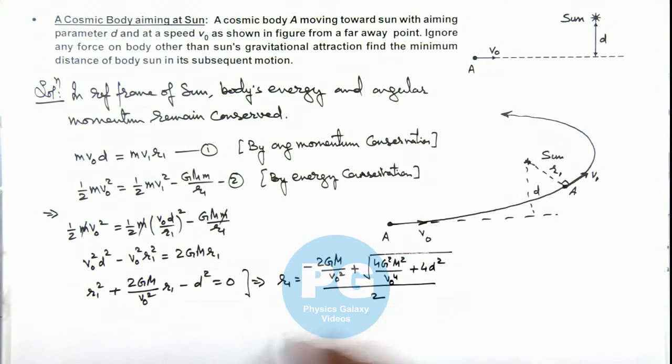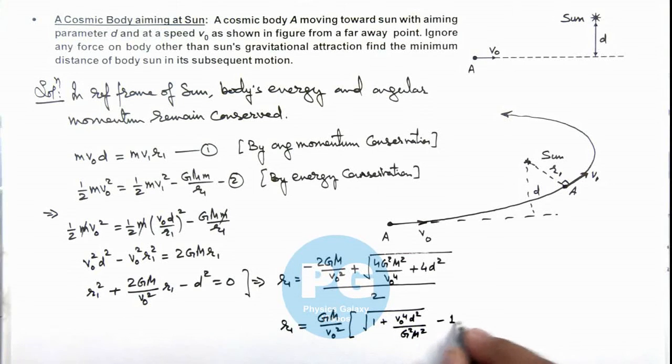So finally after simplification the value of r1, the distance of closest approach we are getting is G M by v not square. I can take common inside, I am having root of 1 plus v not to power 4 d square divided by G square M square minus 1. So this is the final result of this problem.